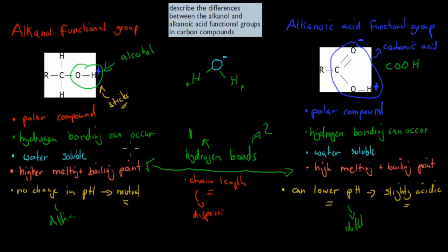Those are the main differences: alkanolic acids have a slightly higher melting and boiling point, and their functional groups can lower the pH. You should also be able to spot these functional groups — if you see both in a test, you should be able to identify which is the alkanol functional group and which is the alkanolic acid functional group. That's the main content for this video — hope it was useful. Thank you for watching.